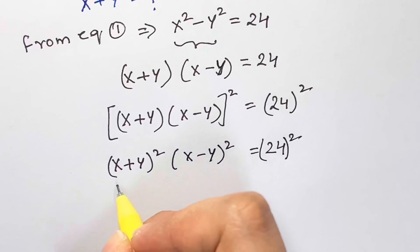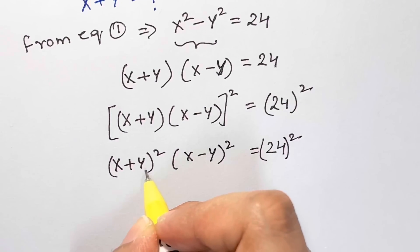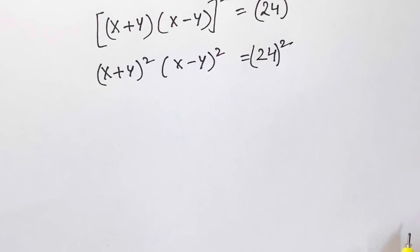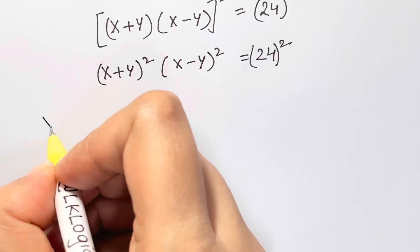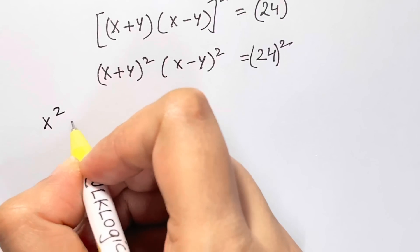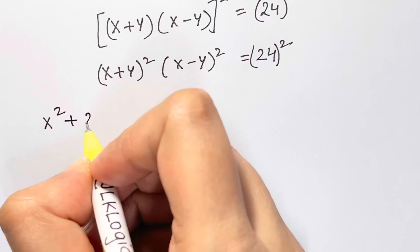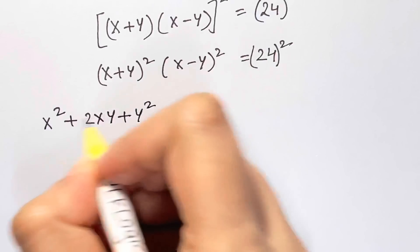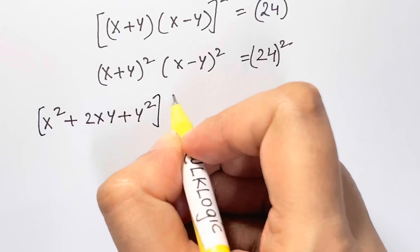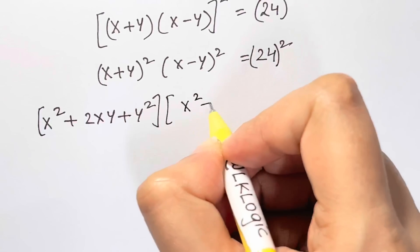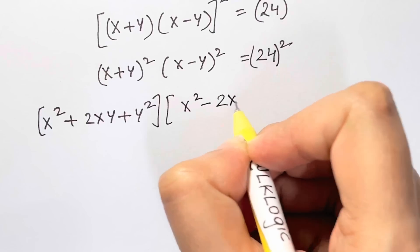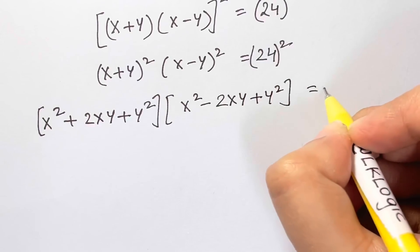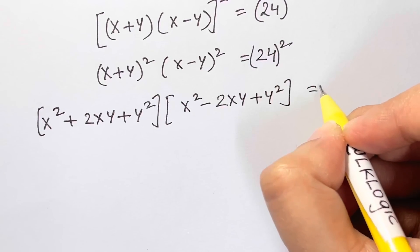Now I'm going to expand this. The first term is (a+b)² and the second is (a-b)², so I get (x² + 2xy + y²) times (x² - 2xy + y²) = 24².